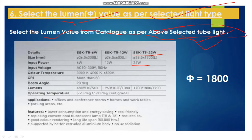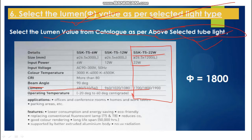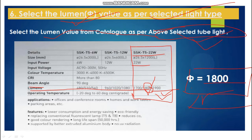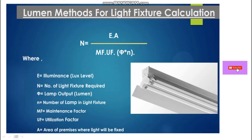We are going to select the lumen value. For this light you can consider 1800 lumens — you can go for 1900 as well, but here I have taken 1800. More lumens means it will give more light per wattage. So phi (Φ) is selected as 1800 lumens.